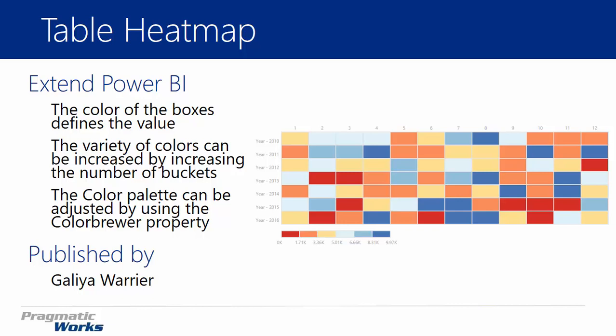You'll see that it allows you to actually change the colors that are used. There's a property in here called Color Brewer, which allows you to modify and adjust the colors you can use — there's a ton of different choices you can select there. You also have an ability to increase the number of buckets, or the variety of colors being used. In the screenshot here on the right-hand side, there are six different buckets being used, and you can tell that from the little legend on the bottom.